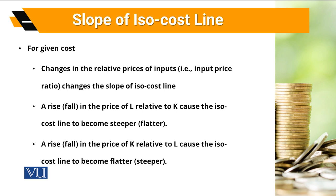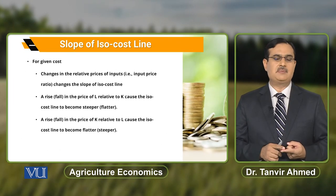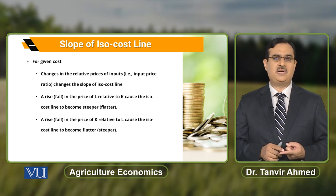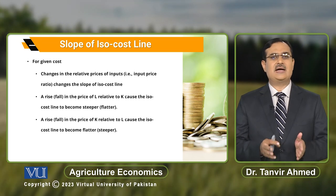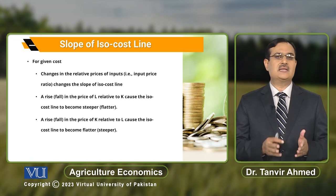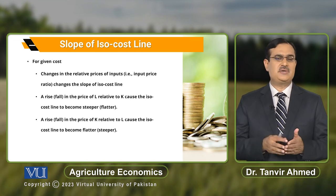In the determination of slope of isocost line, only prices of inputs play a role. If prices of inputs change, there is a change in slope of isocost line — but we are talking about change in relative terms. अगर proportionate increase or decrease आए in all input prices, then there is no change in slope. Slope of isocost line will change only when price of one input changes in relative terms with reference to price of the other input.